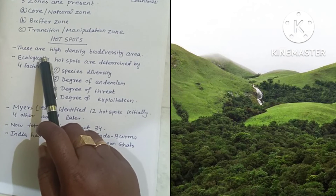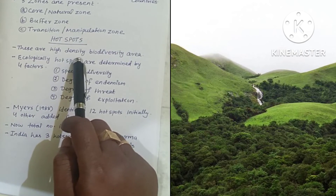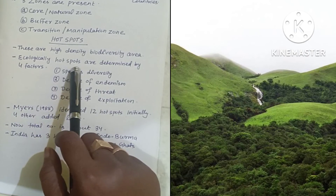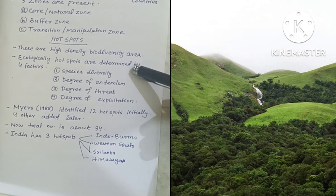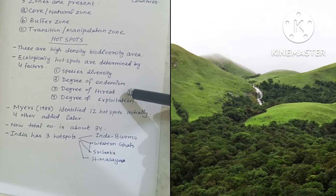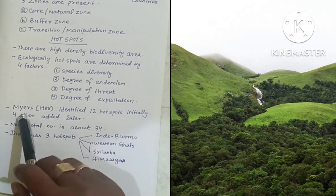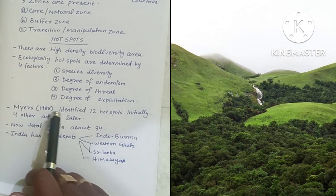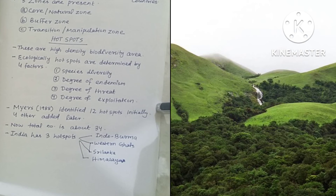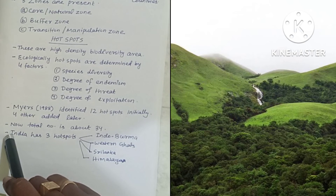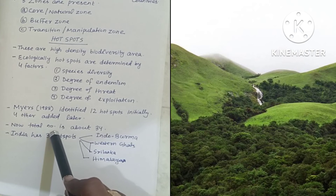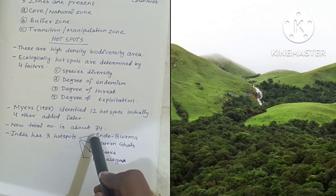Hotspots are high-density biodiversity areas. They are ecologically determined by four factors: species diversity (total number of species), degree of endemism, degree of threat, and degree of exploitation. Mayer in 1988 initially identified 12 hotspots and later added four more. The total number of hotspots is now about 34.